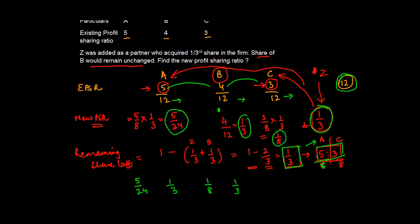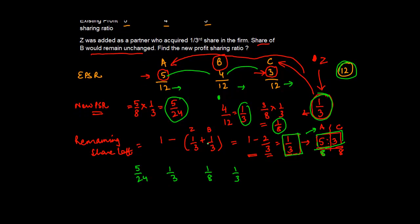In order to convert them into like fractions, which means the denominator is common, we'll take the LCM of these four: 24, 3, 8, 3. The LCM is 24. We'll convert all of them such that the denominator is 24. Here it is already there, so I don't need to do anything. Here if I multiply both numerator and denominator by 8, I will get 8 by 24. Here 3 by 24, again 8 by 24.